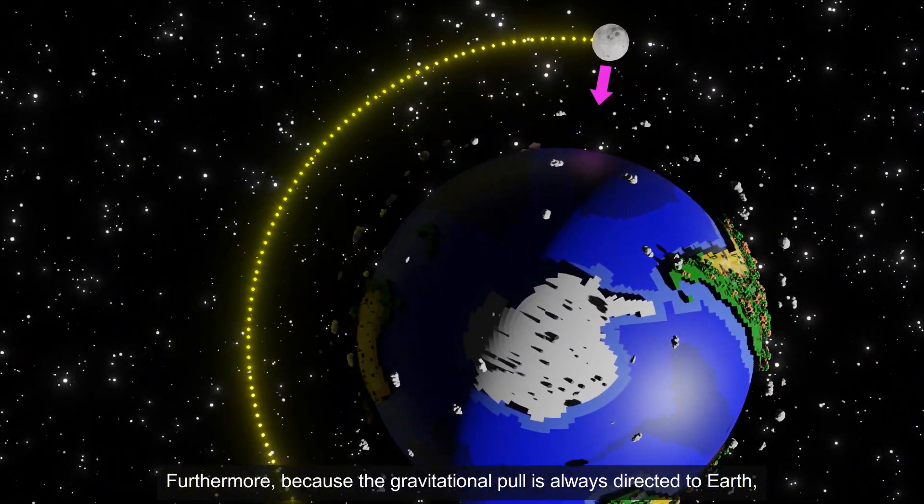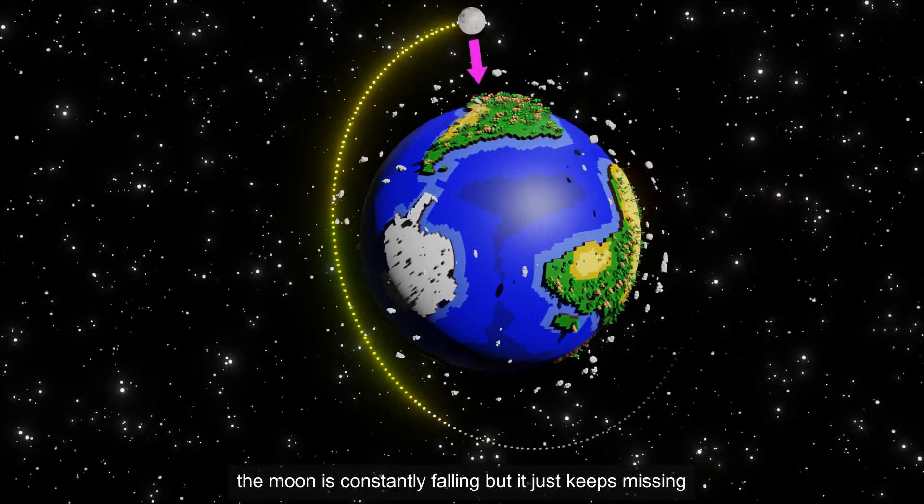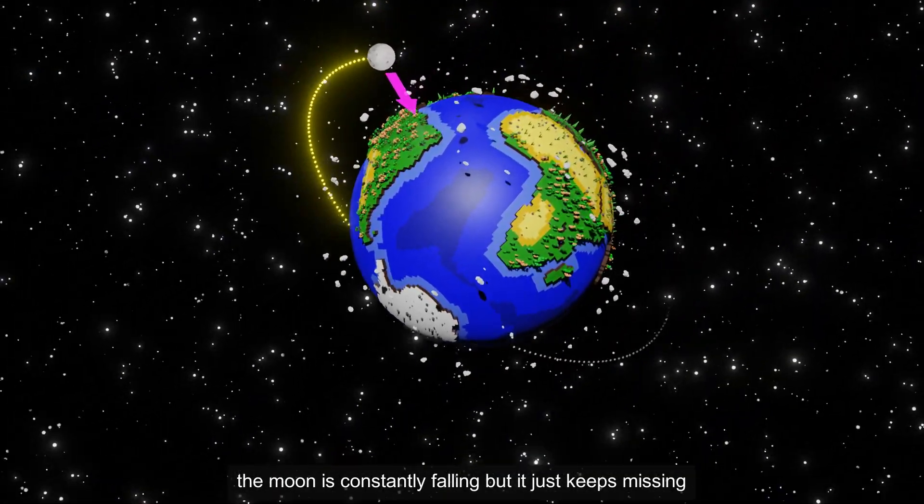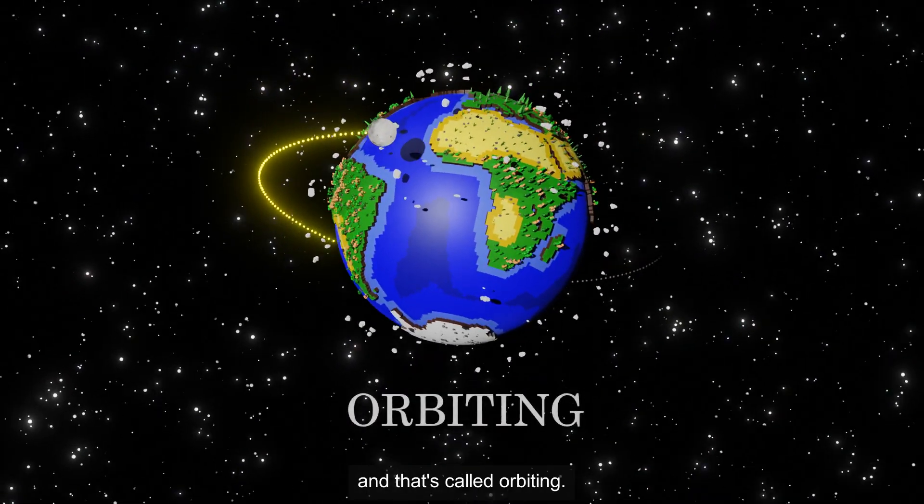Furthermore, because the gravitational pull is always directed to Earth, the Moon is constantly falling, but it just keeps missing, and that's called orbiting.